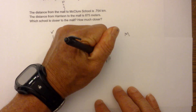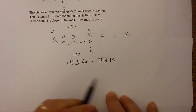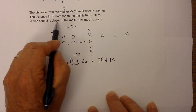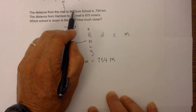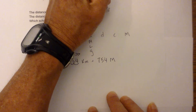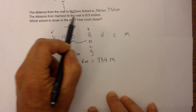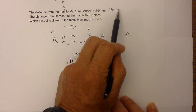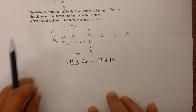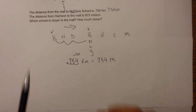Moving the decimal three places gives us 750 meters. So 750 meters compared to 875 meters means McClure is closer to the mall. To recap: you need to get measurements into the same unit — in this case, we converted from kilometers to meters. I hope that helps with problem solving in metric measure. Thanks for watching.